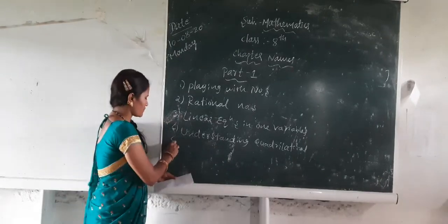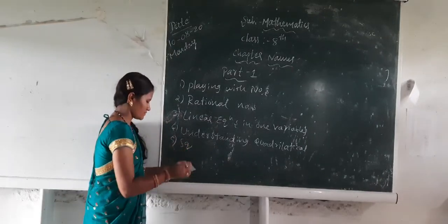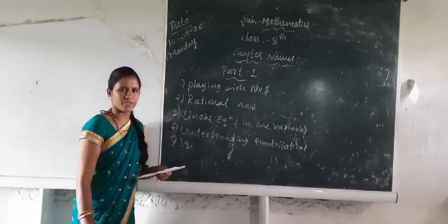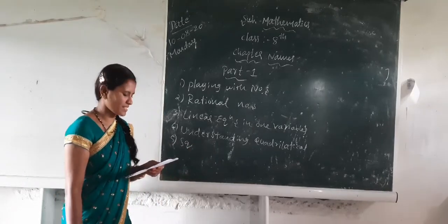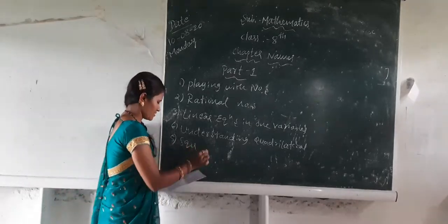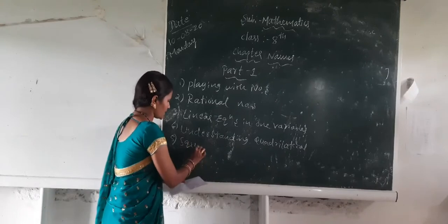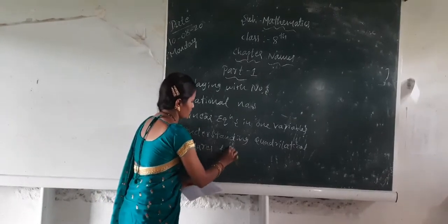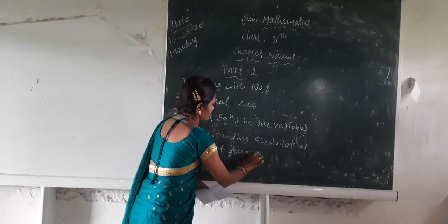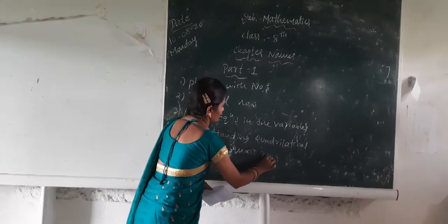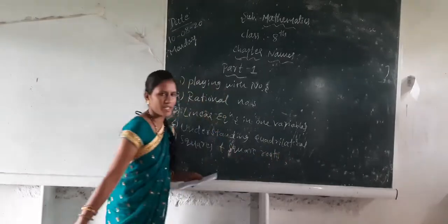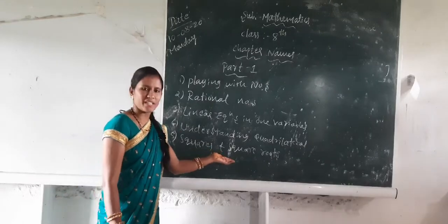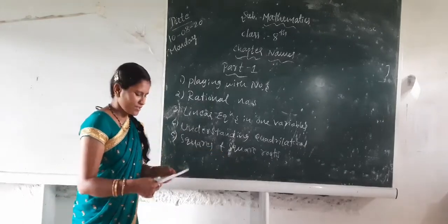The fifth chapter is Squares and Square Roots. If you have a textbook, just glance at the syllabus. You already know how to write square roots, but here square root problems are solved.